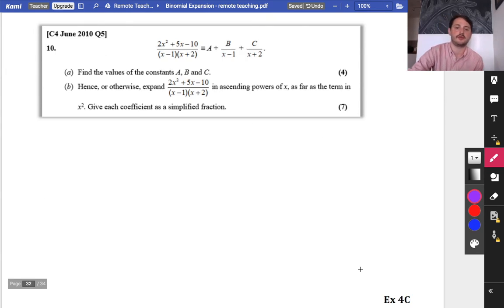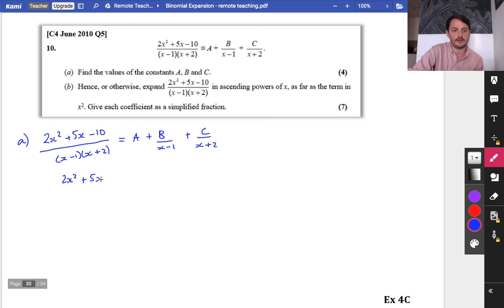So let's do some partial fractions, and then we'll do this up to x², and then you can do exercise for c. If you want, you can even have a go at this question straight away. Part a, we've got some partial fractions. So I've got (2x² + 5x - 10) all over (x - 1)(x + 2) equals A plus B over (x - 1) plus C over (x + 2). Okay, so I'm going to say I've got, I'm going to do this technique, 2x² + 5x - 10 is equal to A(x - 1)(x + 2) plus B(x + 2) plus C(x - 1).